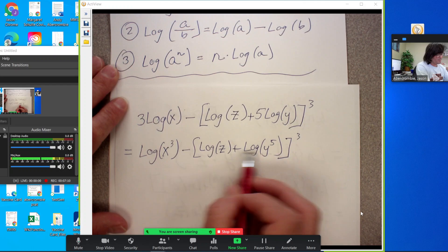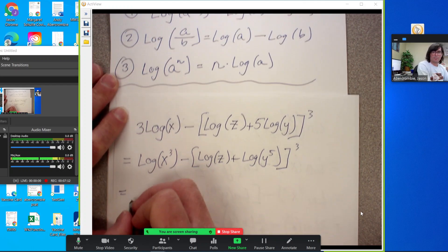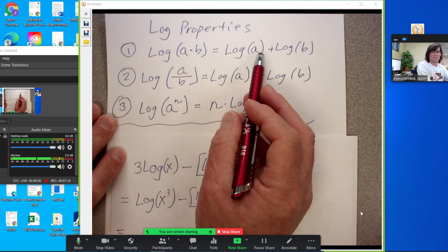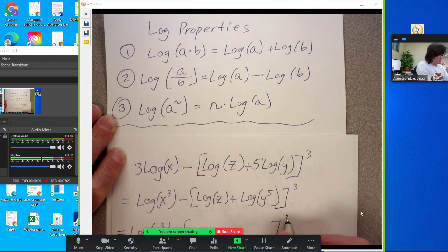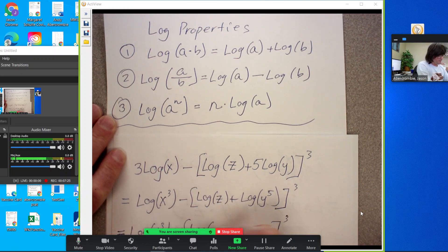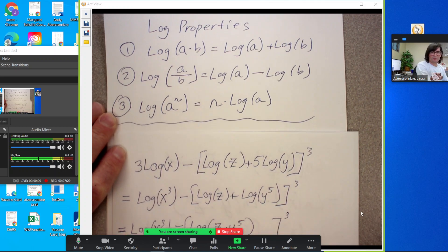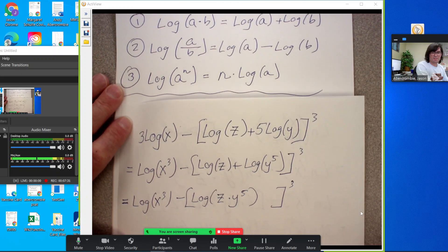We'll put these together with the first log property where two things added together can be rewritten as log of those two things multiplied. So it's going to be, this one stays the same, cube stays the same, but we're going to have log of z times y to the fifth right there. Just multiply the z and the y to the fifth.